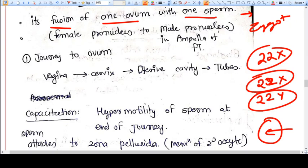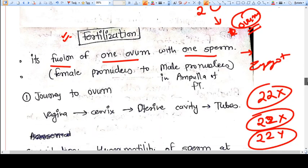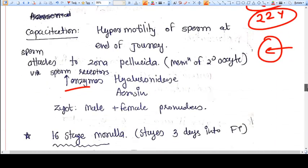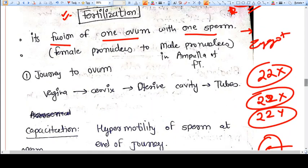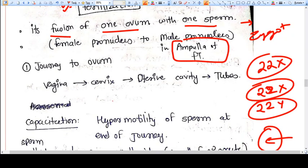They become a single genome that will have the genome of the baby, and it is called a zygote. The fertilization is happening in the ampulla part of the fallopian tube.